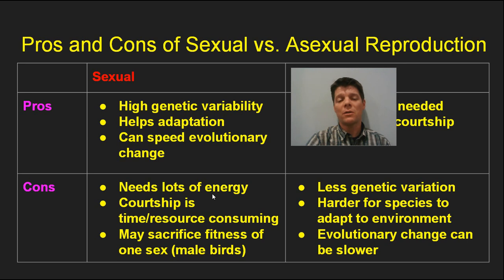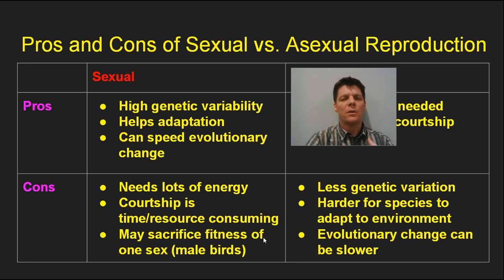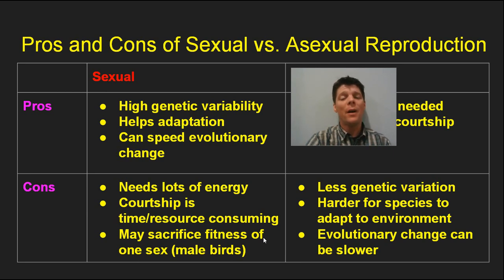In some species there may be sacrifices to the fitness of one sex. For example, many male birds are very brightly colored, which would make them stand out to predators. Darwin's theory of sexual selection said that female birds are more attracted to these brightly colored males because if they can survive despite being easy targets for predators, they must have a really high fitness and a good set of genes — and females are attracted to them because of that.